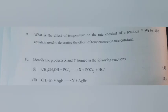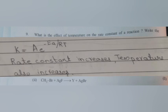Question 9: What is the effect of temperature on the rate constant of a reaction? Write the equation used to determine this effect. Answer: The Arrhenius equation is k = A·e^(−Ea/RT). Rate constant increases as temperature also increases.